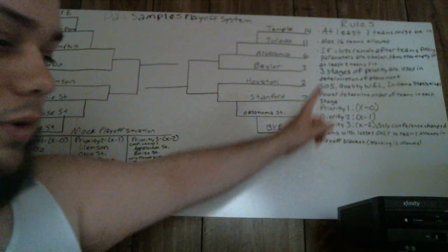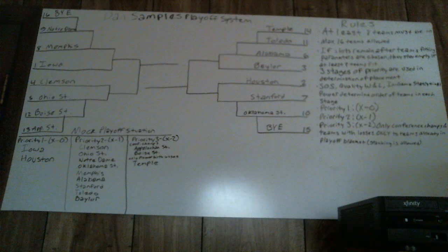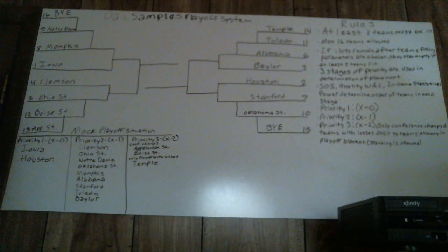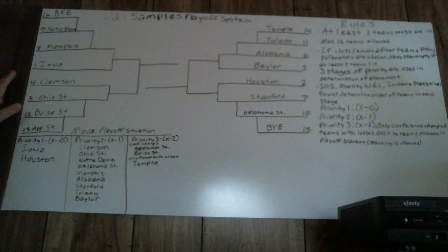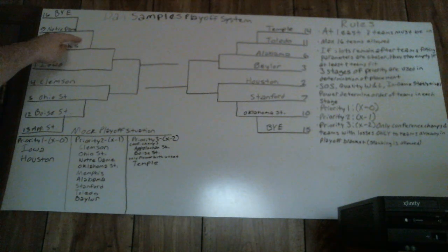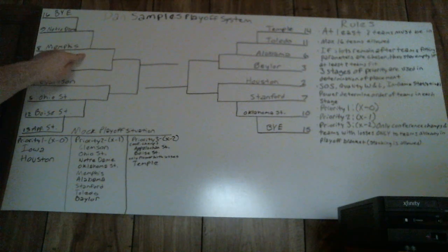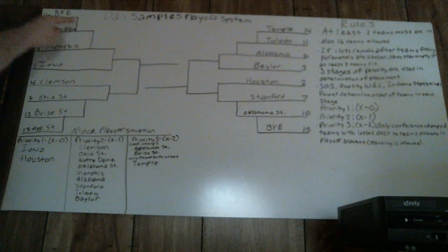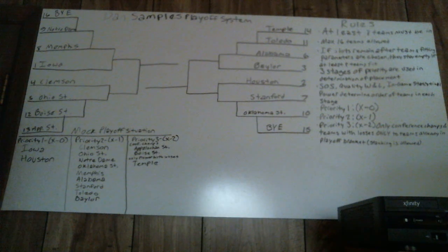We are going to go to the rules of the playoff system as I created it. The first rule is at least eight teams must be in. The reason why the chart is organized the way it is is because of a very weird type of structure. The teams are all set up where two teams have to play each other. This one is basically an if scenario — if this team exists, they play this team; if this team exists, they play this team — and then this team would play this team. Basically, it's a better scenario to cover all the gaps that we originally have.